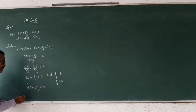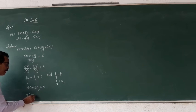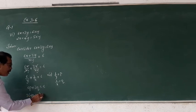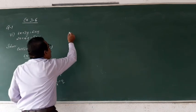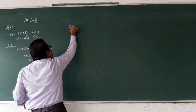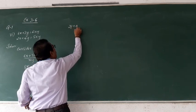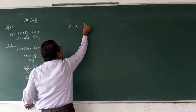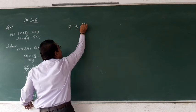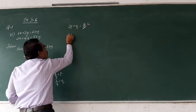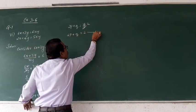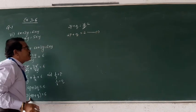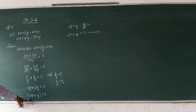Let us simplify: dividing through by 3, we get 2p plus q equals to 2. This will be the first equation.